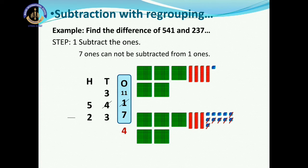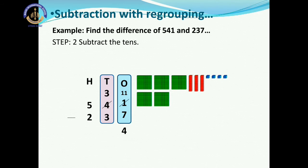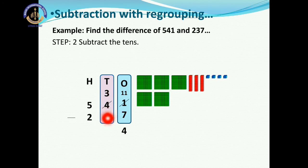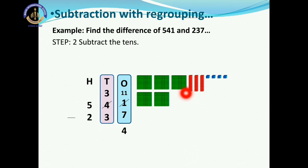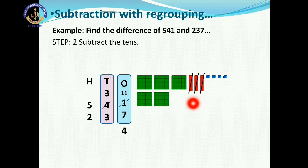Now, step 2 — subtract the tens. On the tens place, we now have 3 and 3. Cut 3 tens from 3 tens. How many tens do we have left? 0 tens. So, 3 minus 3 is equal to 0.